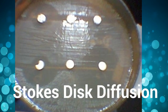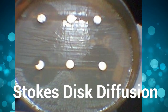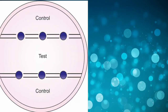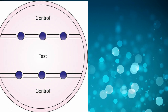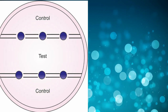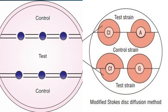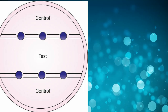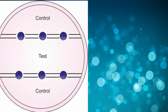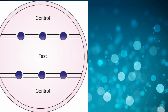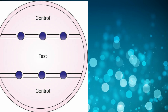Stokes disc diffusion method: in this method, the Mueller-Hinton Agar plate is divided into three parts. The test organism is inoculated on the central part, and the control strain on the upper and lower parts of the plate. In contrast, in the modified Stokes disc diffusion method, the test bacterium is inoculated over the upper and lower parts of the plate and the control on the central one-third. A gap of 2 to 3 mm wide where there is no inoculum should separate the test and control areas. The discs are applied on this gap.